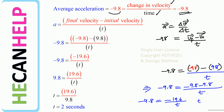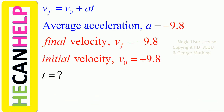So what is the time? Two seconds. That's what I did here: acceleration equals final velocity minus initial velocity divided by time. Final velocity is negative 9.8, initial velocity is positive 9.8, so you get negative 9.8 equal to negative 19.6 divided by time. Time is two seconds.